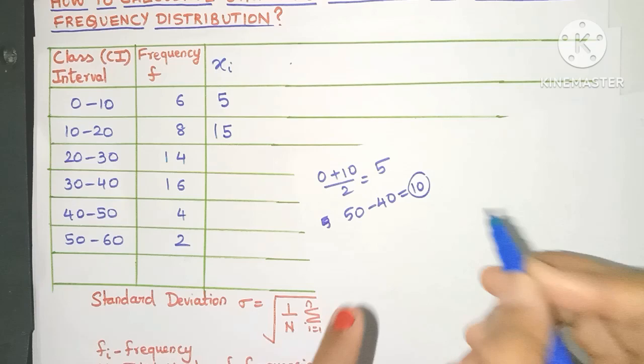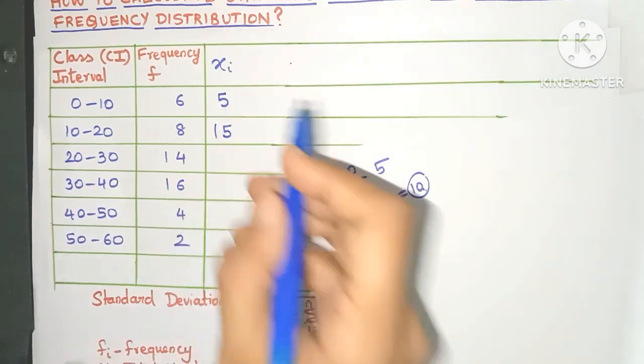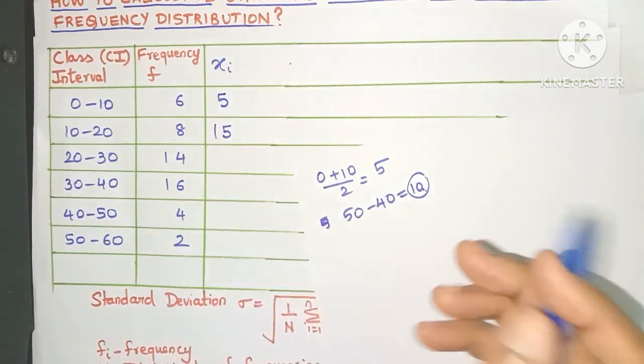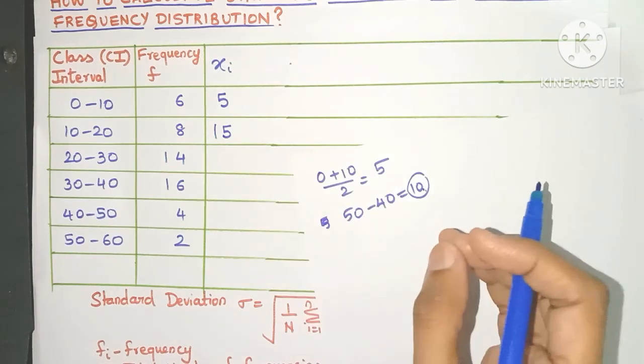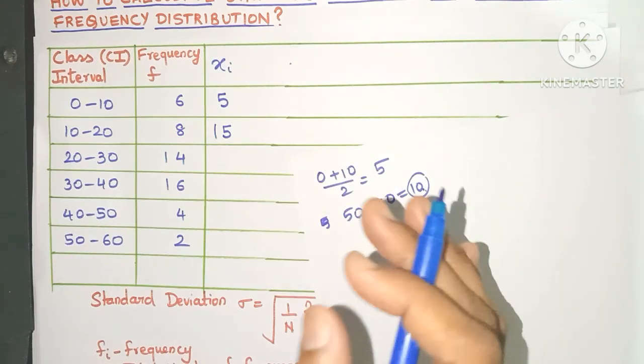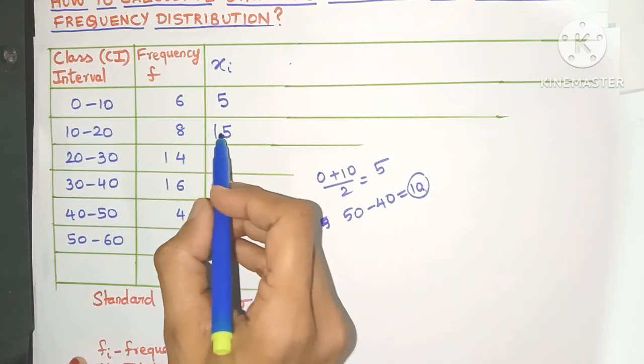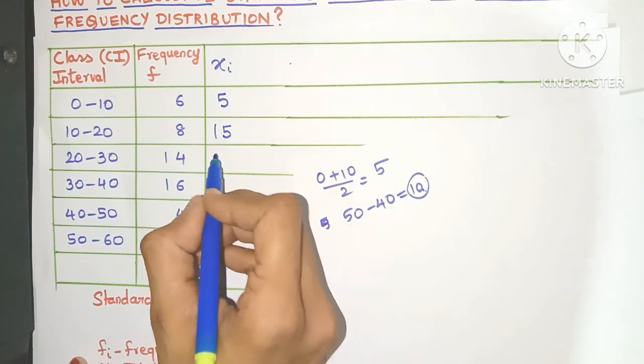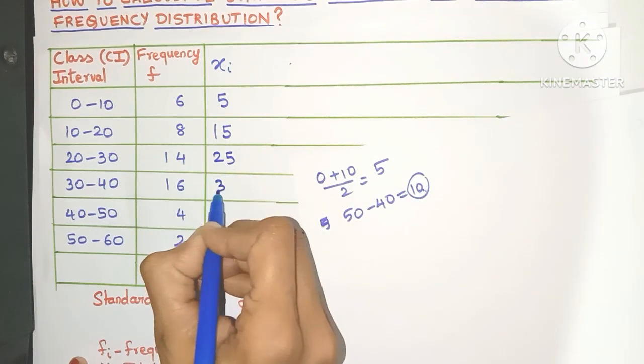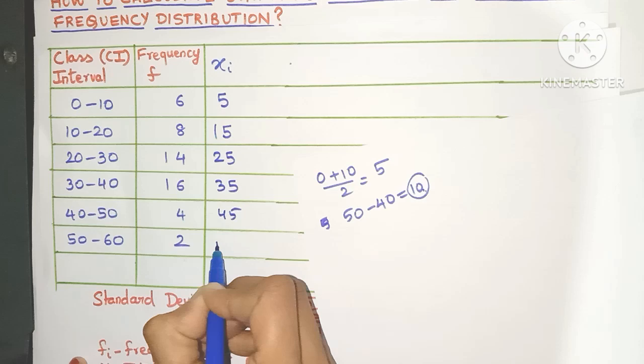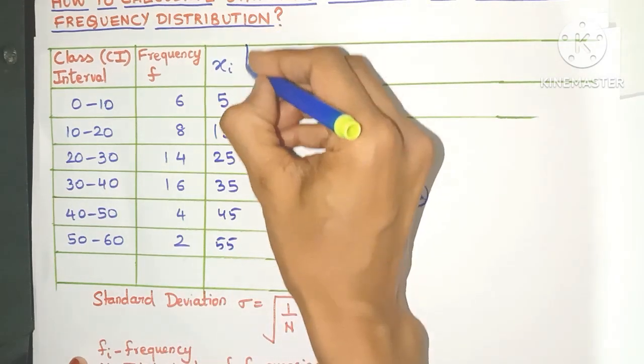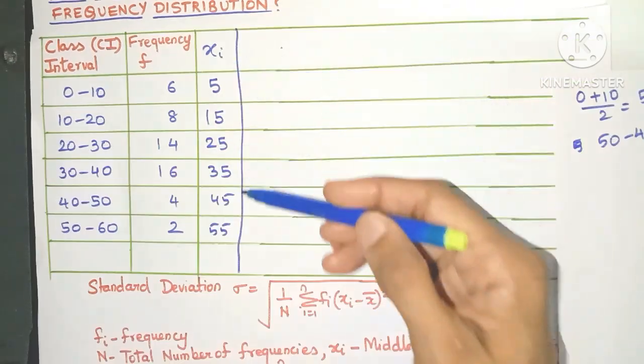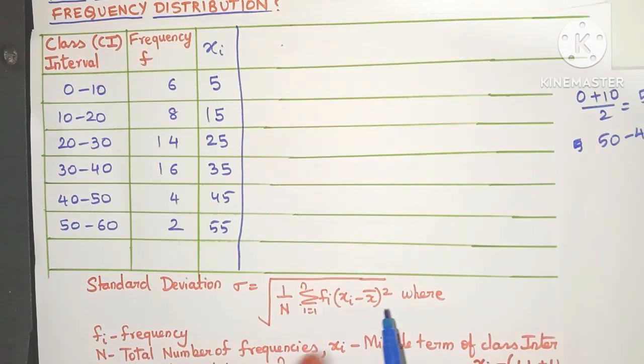Now you just need to add this class size to the first xi value. So 5 plus 10, which is 15. So that way also you will easily get the xi value. You just need to add 10 to this 15. You will get 25, 35, 45, and 55. So that's how you get the xi value.